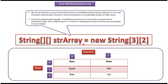This multidimensional array has three rows: row 0, row 1, and row 2, and it has two columns: column 0 and column 1. We can access elements using indices — 0,0 for the first element, 0,1 for the second, 1,0, 1,1, 2,0, and 2,1.